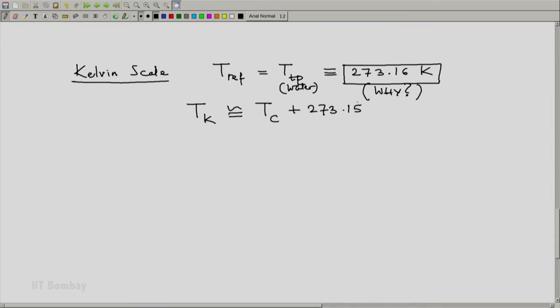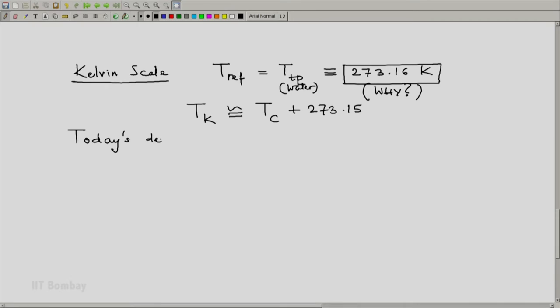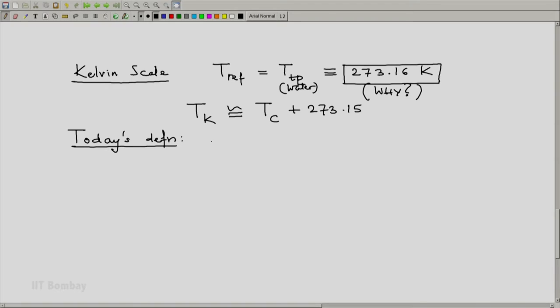But again, we cannot have this approximation. We know that Kelvin is defined this way, and the relation is approximately this. So, today's definition is that the Celsius scale is defined in terms of the Kelvin scale. So, today we define that the Celsius temperature of any system is defined to be the temperature of the same system on the Kelvin scale minus 273.15.